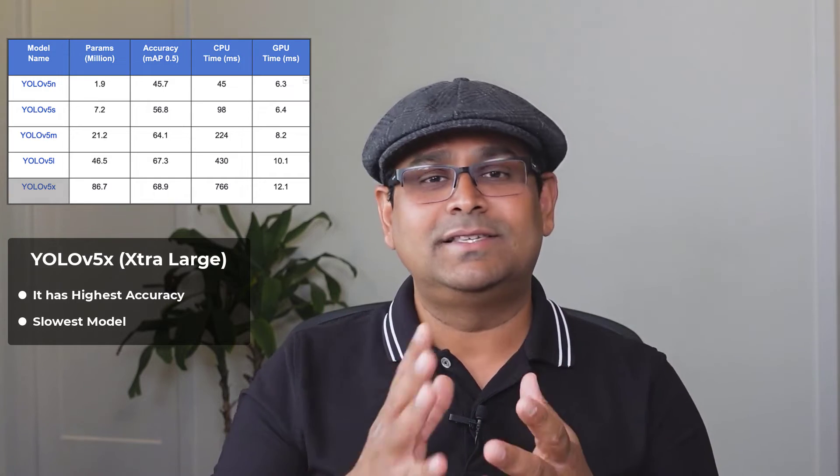YOLO v5M, where M stands for Medium, has 21.2 million parameters. It provides a good balance between speed and accuracy and is therefore well suited for many datasets and applications. YOLO v5L, where L stands for Large, has 46.5 million parameters and is ideal for datasets where we need to detect small objects. YOLO v5X, where X stands for Extra Large, is the largest among the five models with 86.7 million parameters. It has the highest accuracy but is also the slowest.